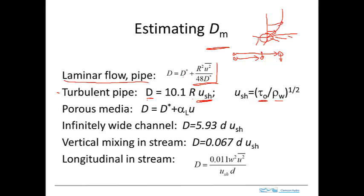In porous media, D equals the molecular diffusion plus alpha — the dispersivity — times the velocity. You can see the pattern: a length term times a velocity. For an infinitely wide channel, it's the depth of the channel times the shear velocity. For vertical mixing in a stream, similarly the depth times the shear velocity. For longitudinal dispersion in a stream, it's a bit more complicated: there's W squared, velocity squared, divided by the depth and the shear velocity. This is more complex but has the right units.